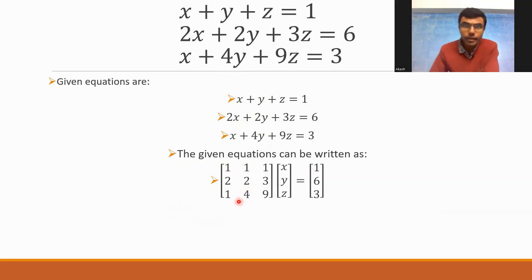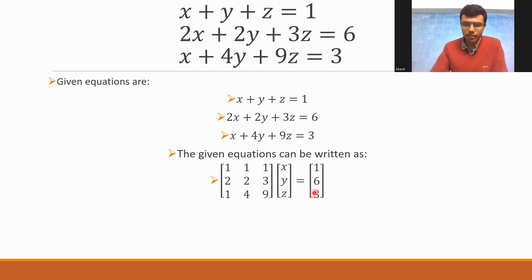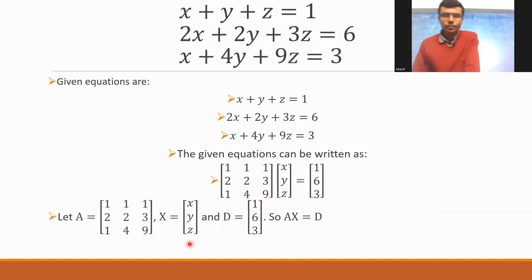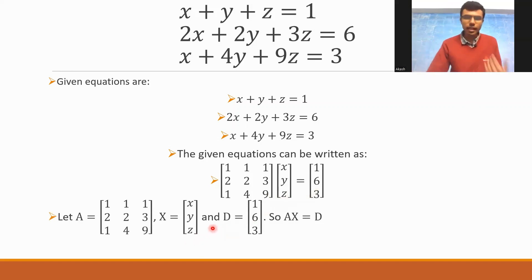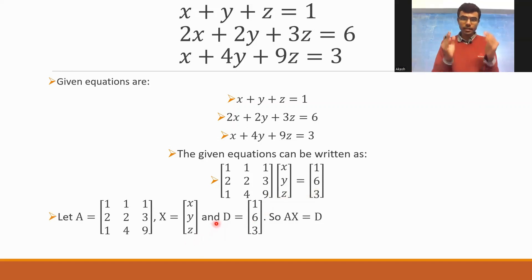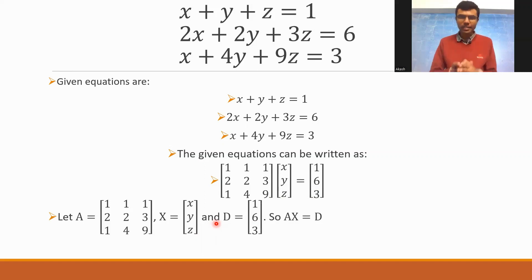I'm going to take this first matrix as A, the second matrix as capital X, and the third matrix as D. So basically A is this, capital X is this, and capital D is this. So A into capital X is equal to capital D.